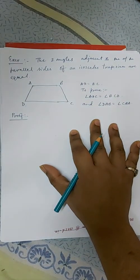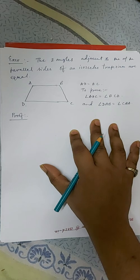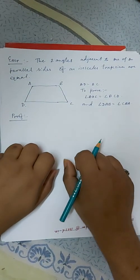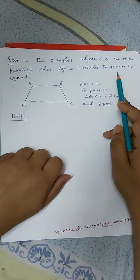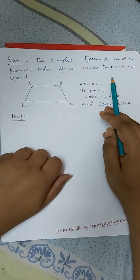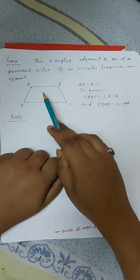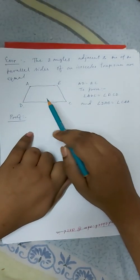Okay, so our next theorem is that two angles adjacent to one of the parallel sides of an isosceles trapezium are equal. So what does the question mean? ABCD is an isosceles trapezium.